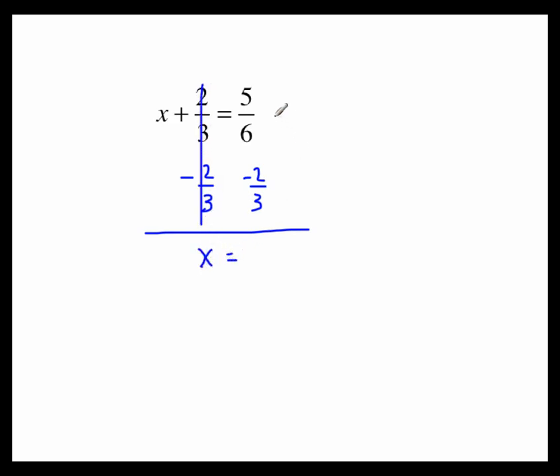Now, to do the fractions, you know you have to have a common denominator to add or subtract fractions. The least common denominator is 6. The top fraction already has a denominator of 6, so its numerator stays 5. The bottom, however, has to be multiplied by something to create this equivalent fraction.